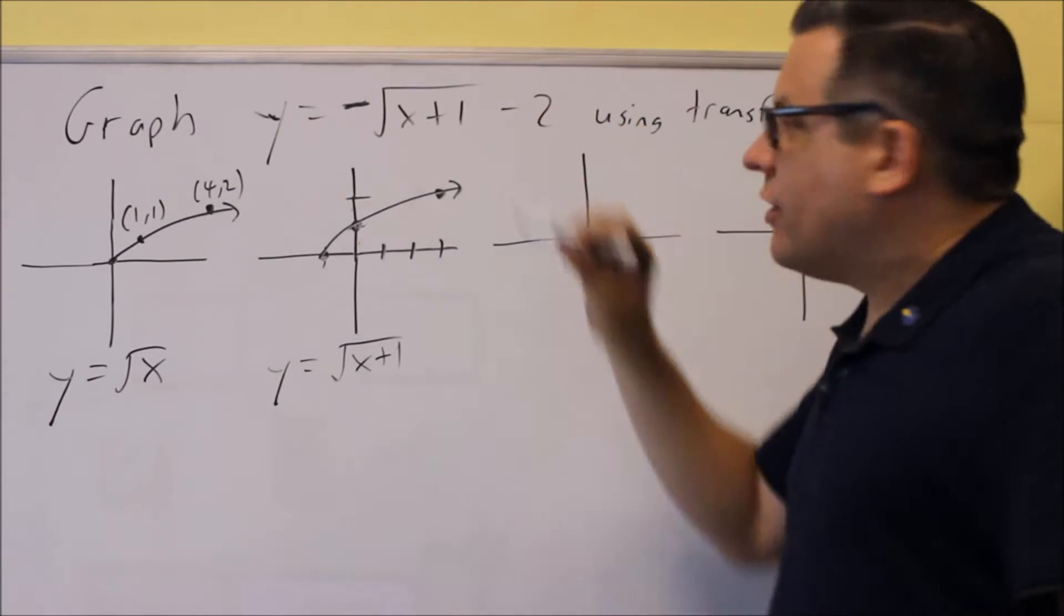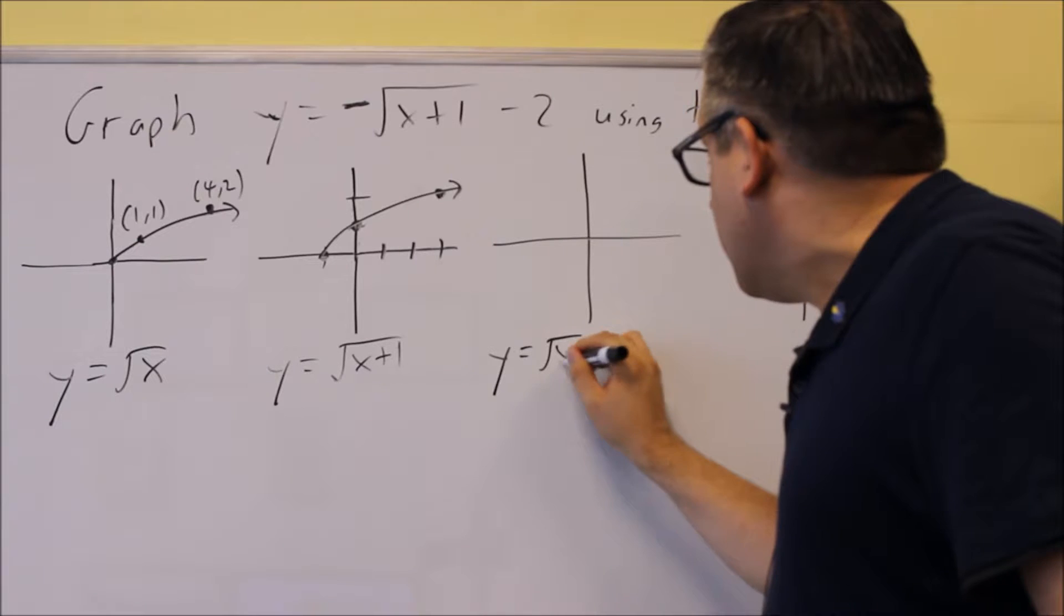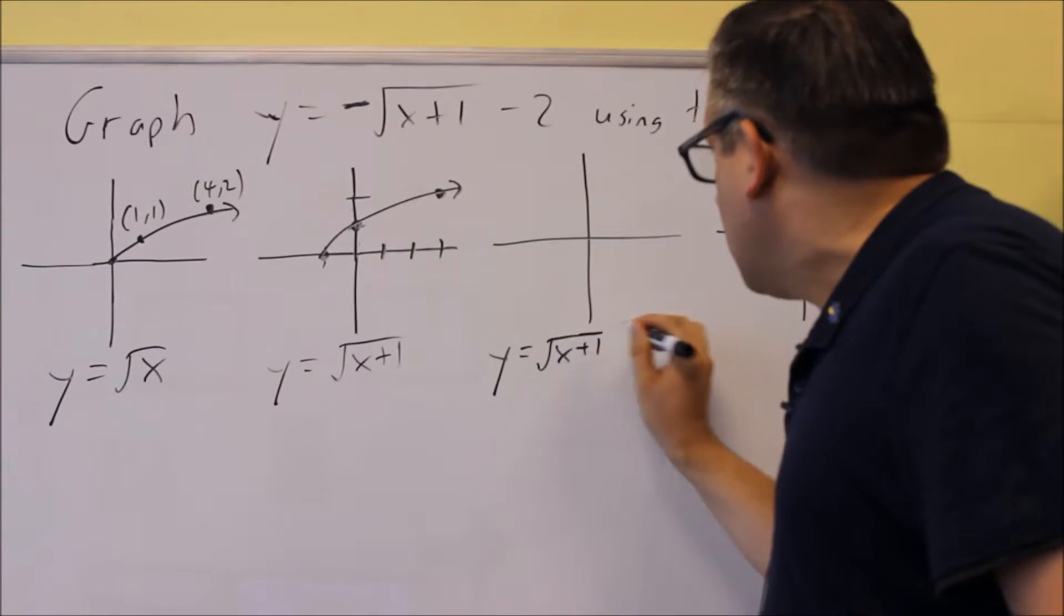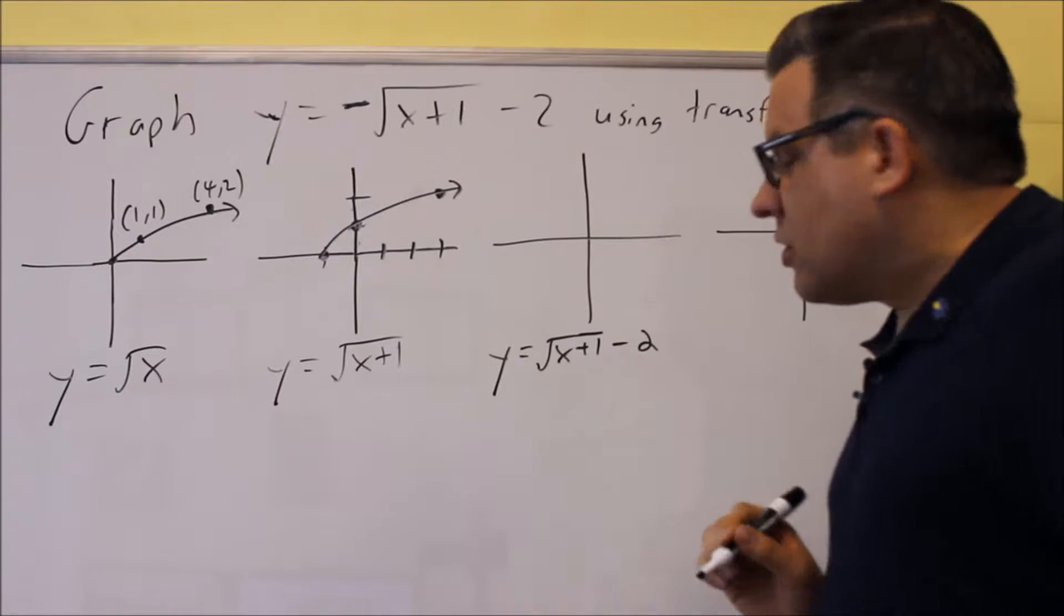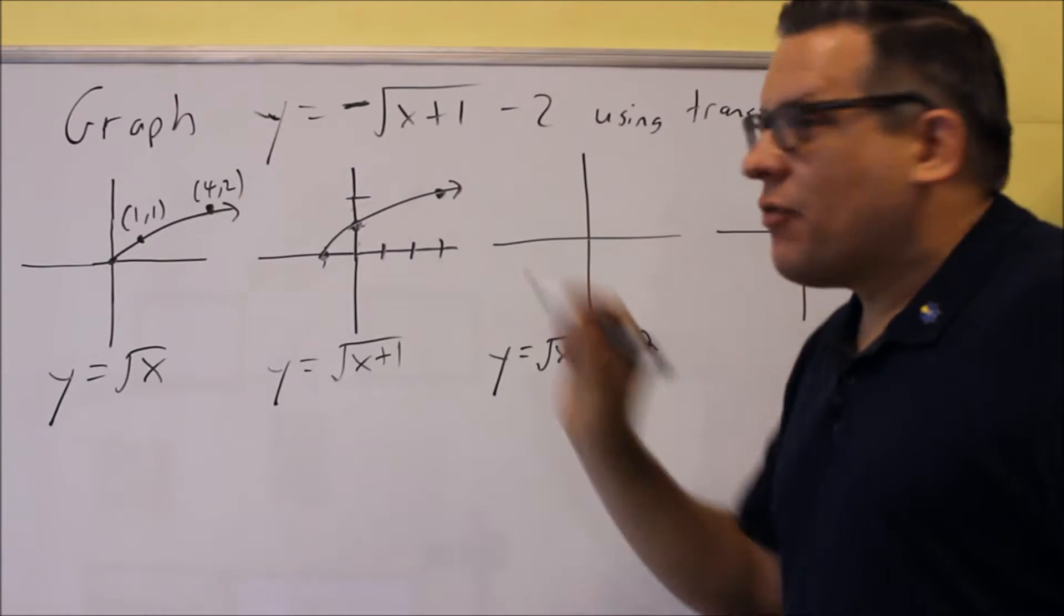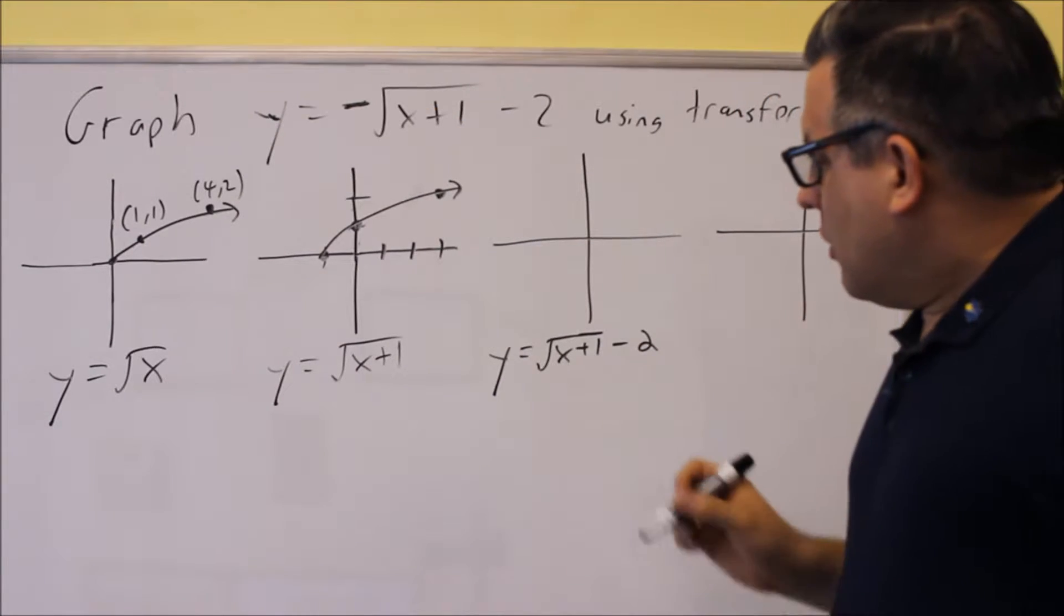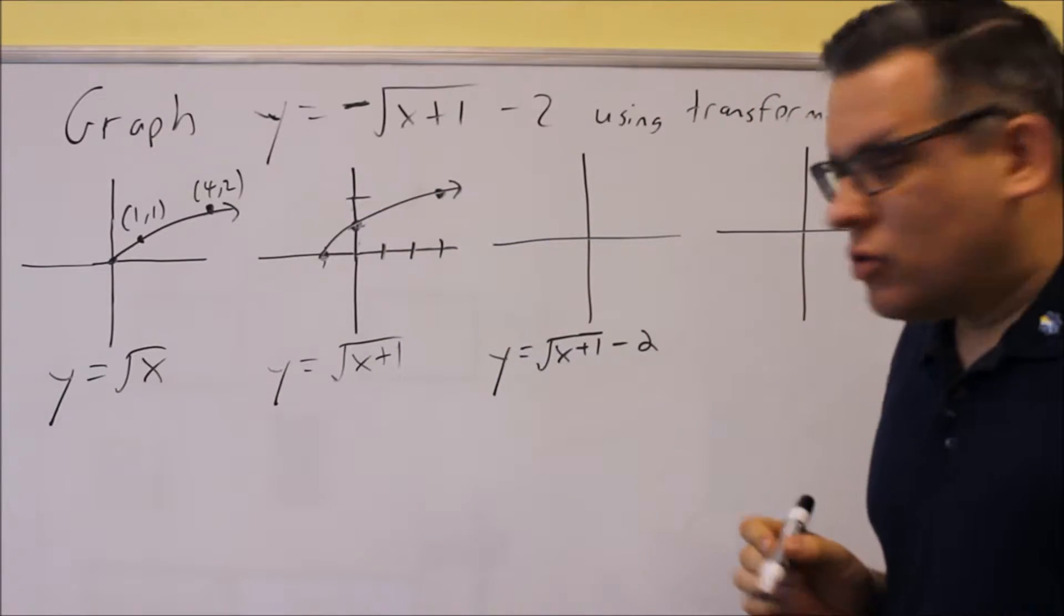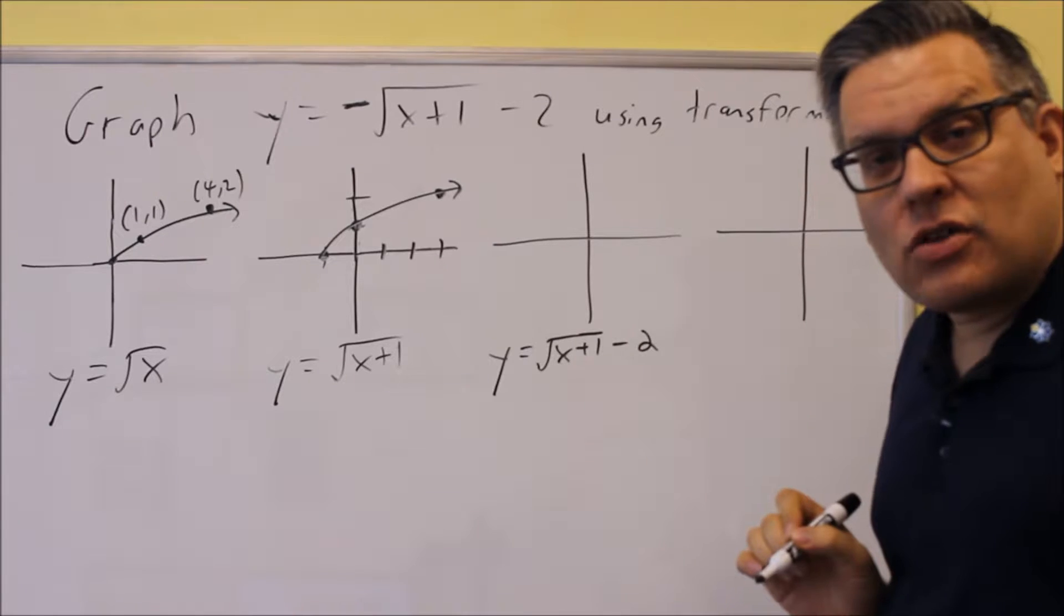Next, let's apply the negative 2 on the outside. So now the graph that we're going to do is square root of x plus 1 minus 2. So basically everything except for the negative sign. It's going to take this graph the way it is. It's going to shift it down 2 units because of the minus 2 in the end.